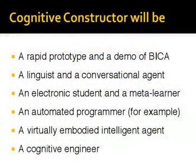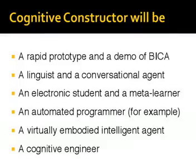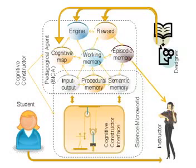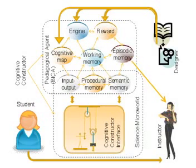So what is a cognitive constructor? Well, it is a multi-dimensional, multi-modal thing. It is going to be a rapid prototype consisting of a linguist and a conversational agent, an electronic student and a micro-journal, an automatic programmer — for example, if you select the domain of teaching. A virtual embodied agent and a cognitive engineer that will explain the data, which justifies the term 'cognitive constructor.' We implement a virtual micro-world which represents the domain of knowledge — for example, elementary school science or high school physics — which has not only diagrams representing physical objects like blocks and rods, but also elements representing concepts like forces or even instances of equilibrium of forces, treated at the same level as objects in this world.